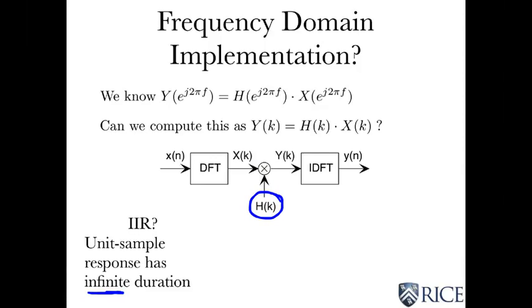However, the sampling theorem still applies. Those sampled values correspond to an aliased version of the unit sample response of the actual IIR filter. So you can't really get there.